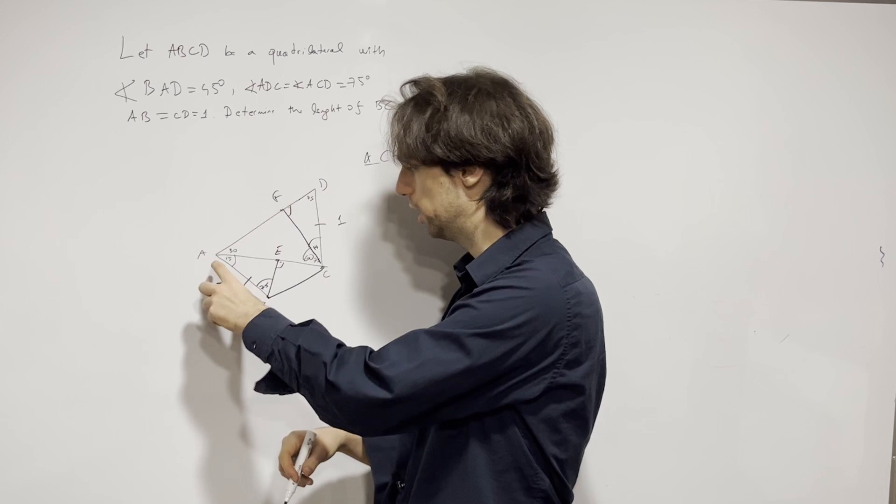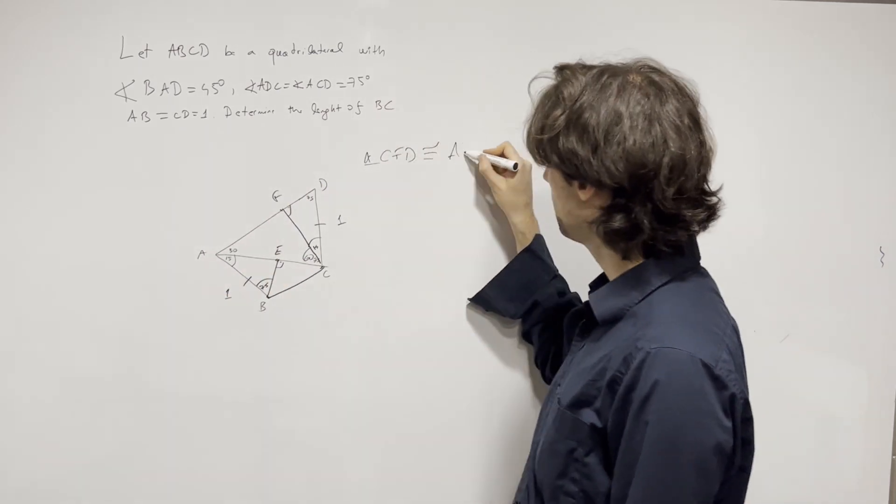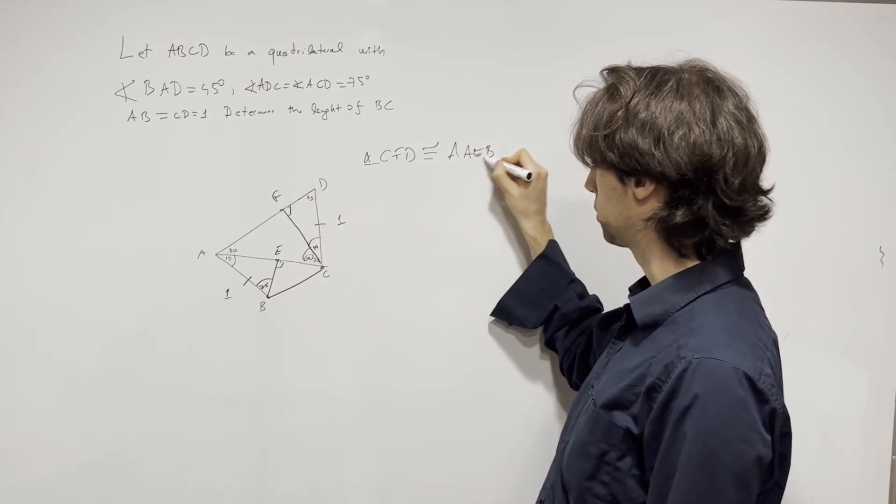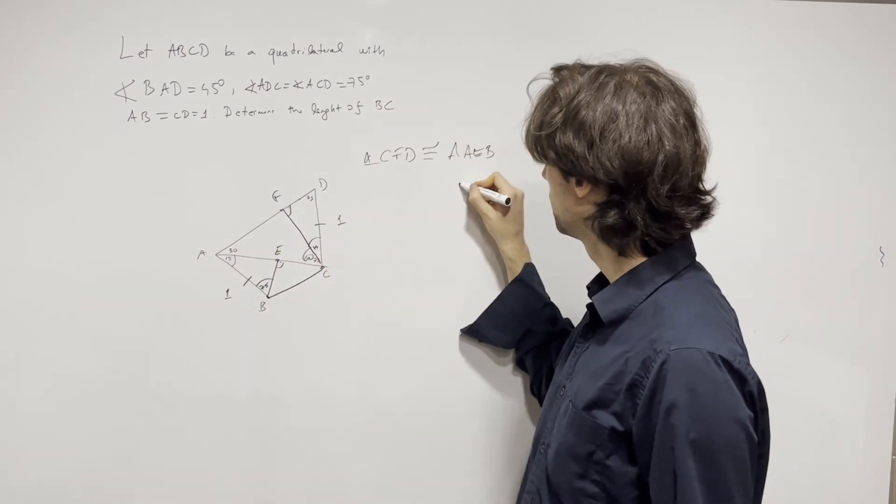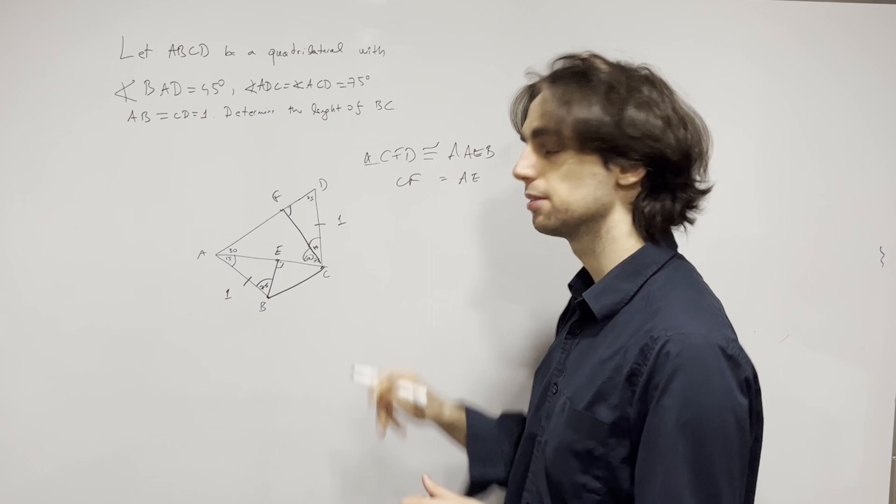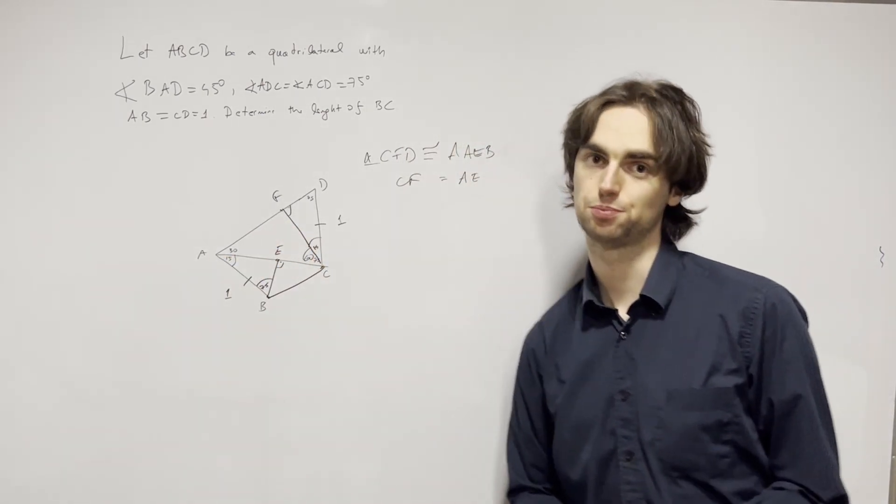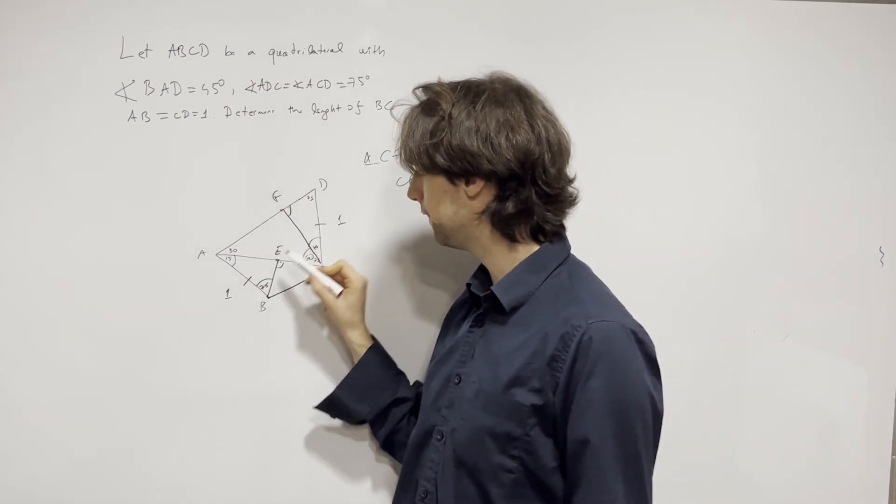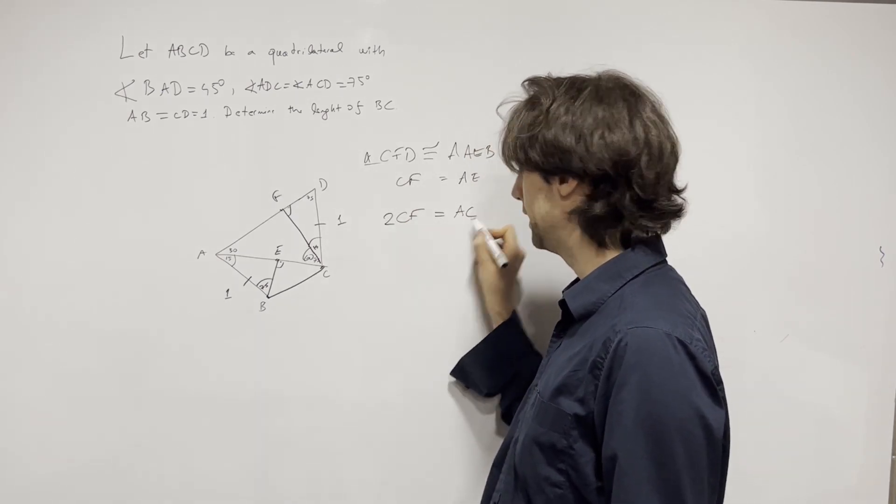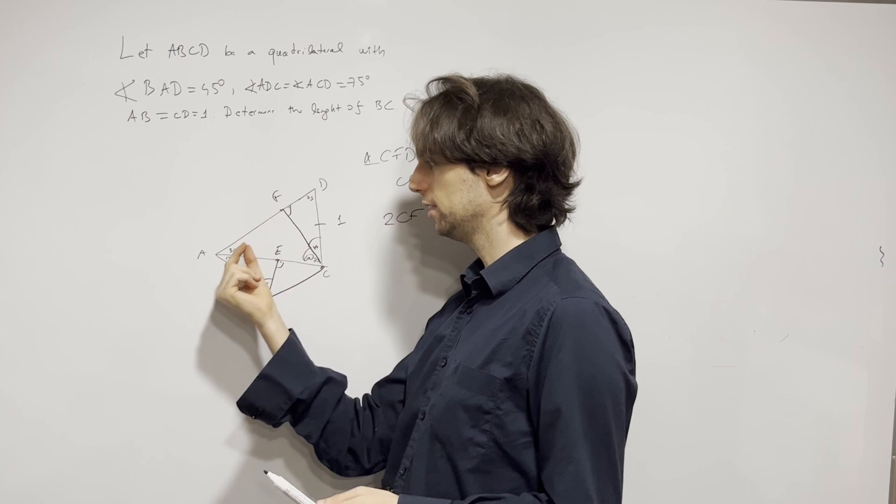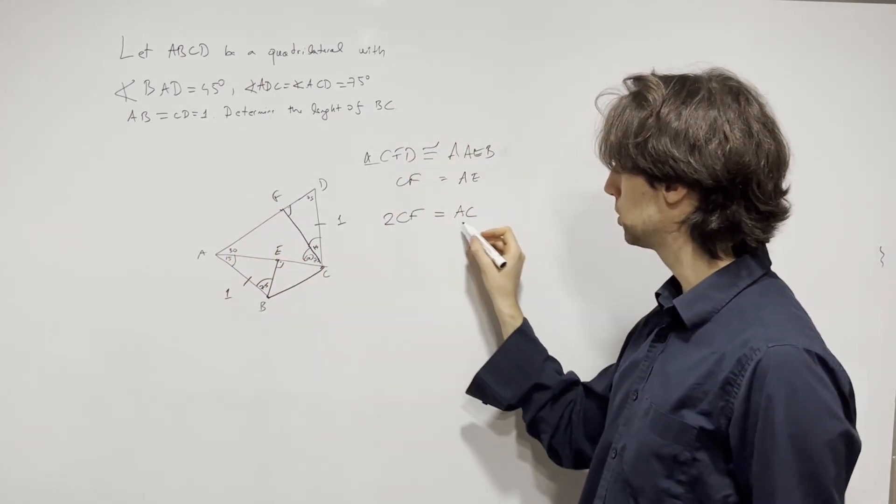So here what I have, I have triangle CFD is congruent to triangle CEB because it's 15, 75, 90, and one, one on the hypotenuse. So we have CFD is going to be congruent to CEB. And this congruency gives us that AE is equal to CF. Now what do we have from this triangle right here? Well, we have that two times CF is equal to AC, because CF is opposite 30 and this is 30, this is 90, this is the hypotenuse. So we have this.